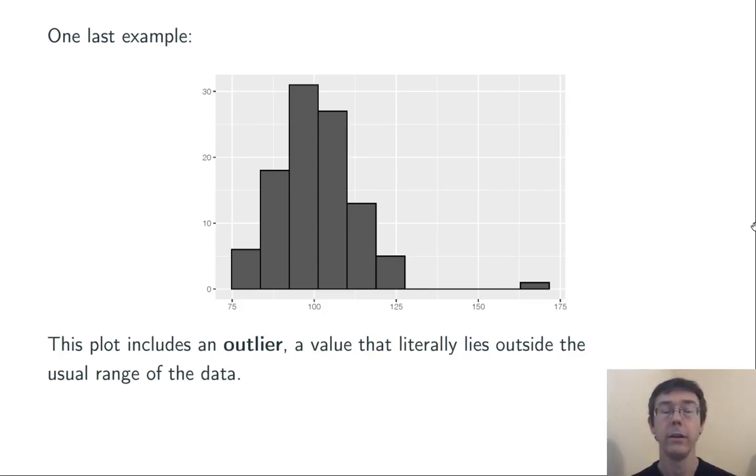If we ignore that, we have a fairly symmetric distribution, one that may even have a bell shape. What we have here is an outlier, a value that literally lies outside the usual range of the data.